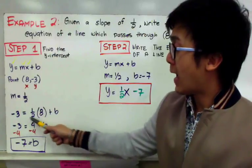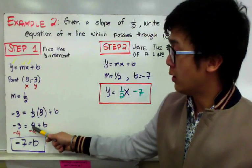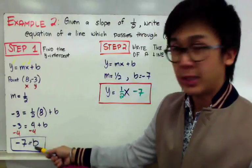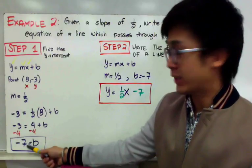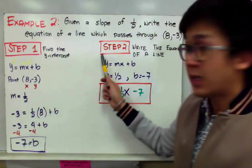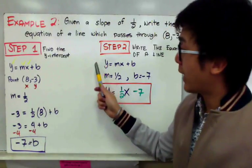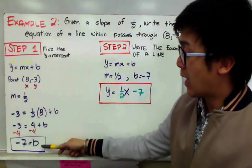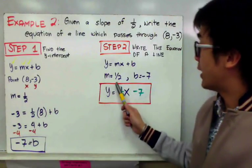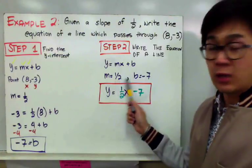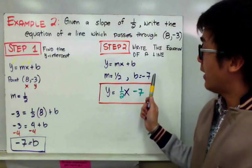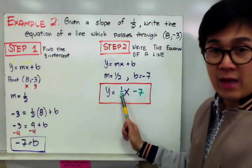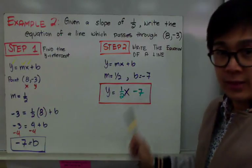Solving for b: one-half of eight equals four, so subtract four from both sides and we get b = −7. Therefore, in step two, since we have our given slope and found our y-intercept, we are ready to write the equation of a line. The equation of the line is y = (1/2)x − 7.